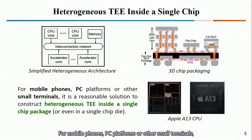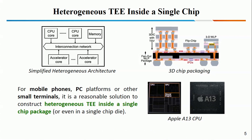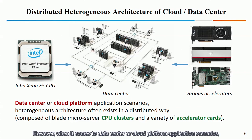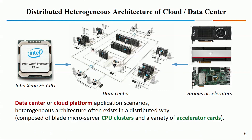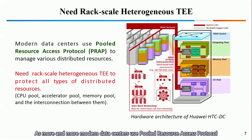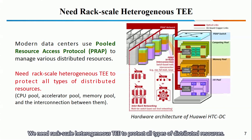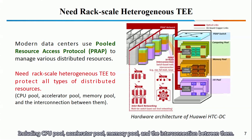For mobile phones, PC platforms, or other small terminals, it's a reasonable solution to construct HeatGenius-T inside a single-chip package or even a single-chip die. However, when it comes to data center or cloud platform application scenarios, the HeatGenius architecture often exists in a distributed way, composed of blade microserver CPU clusters and a variety of accelerator cards. As more and more modern data centers use pooled resource access protocols to manage various distributed resources, we need RackScale HeatGenius-T to protect all types of distributed resources, including CPU pool, accelerator pool, memory pool, and the interconnections between them.